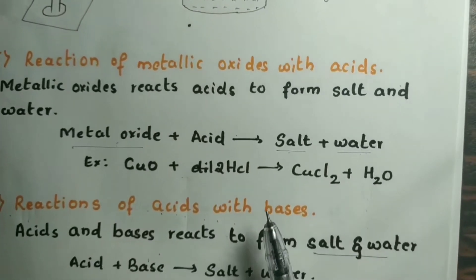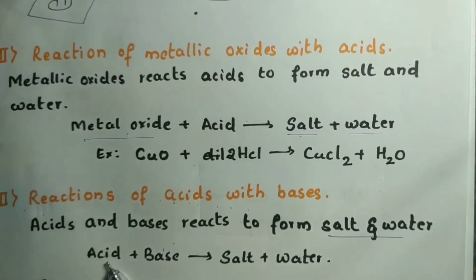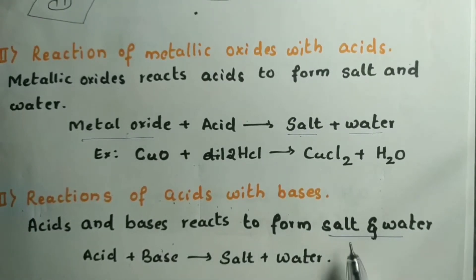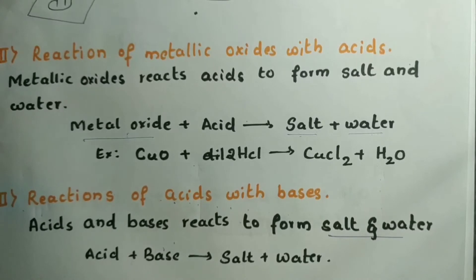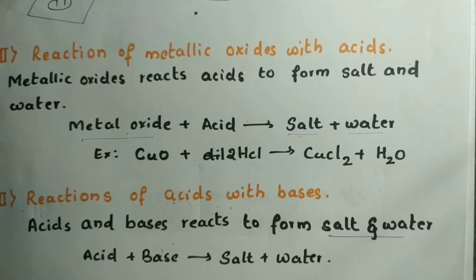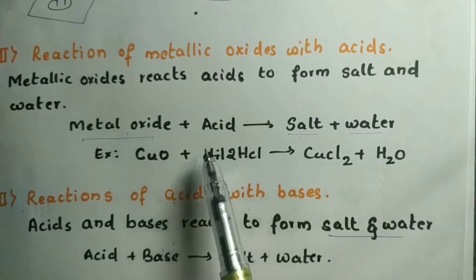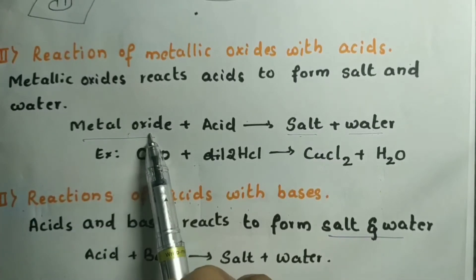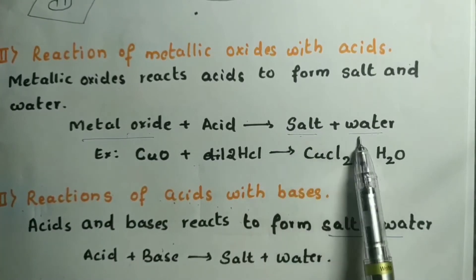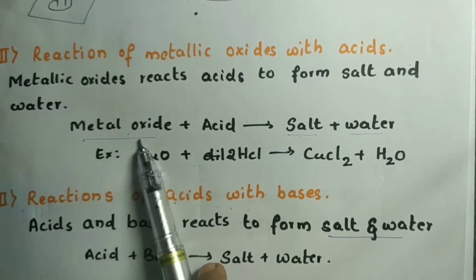The next reaction is the reaction of acids with bases. Acids and bases react to form salt and water, which are neutral — that is why this is called a neutralization reaction. For example, hydrochloric acid plus sodium hydroxide gives sodium chloride and water. Since both reactions give salt and water, we can conclude that metal oxides are basic in nature.